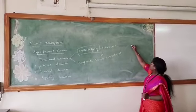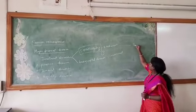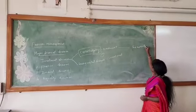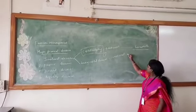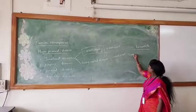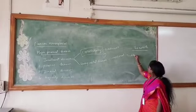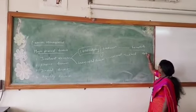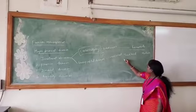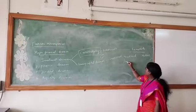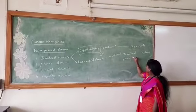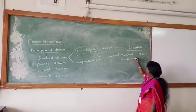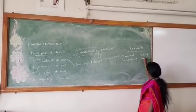In capital budgeting decision there are two different methods. One is the traditional method, and one is the modern method. The traditional method is also called the non-discounted method, and the modern method is also called the discounted method.